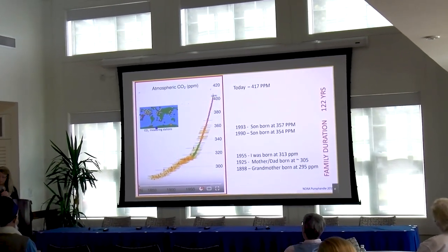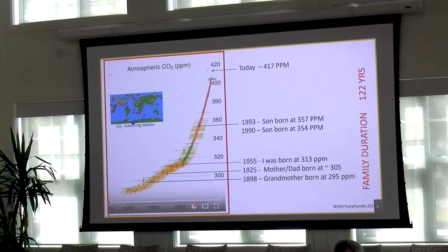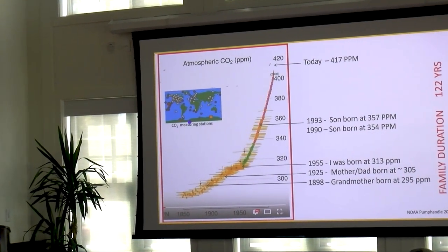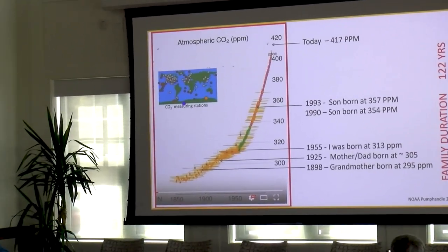I just want to put this in perspective about my family. When my grandmother was born in 1898, the CO2 in the atmosphere was 295 parts per million. When my parents were born around 1925, it was 305. When I was born in 1955, it was 313. My children were born here in Amherst around 1980. And today we're approaching 420. So this is like this on the scale of things.